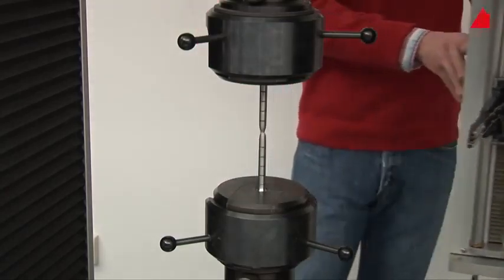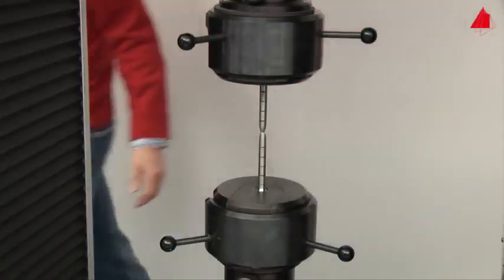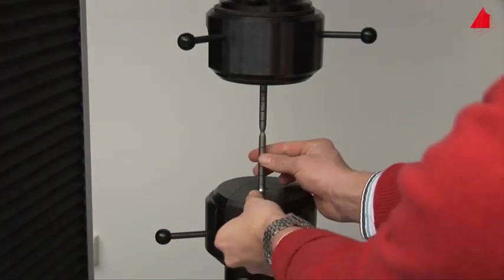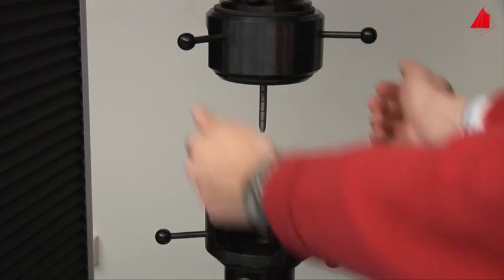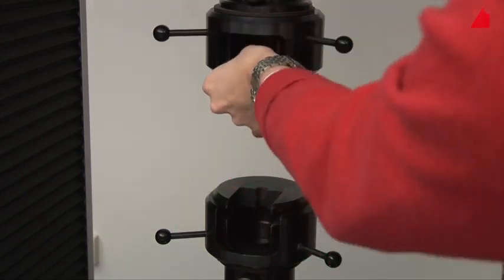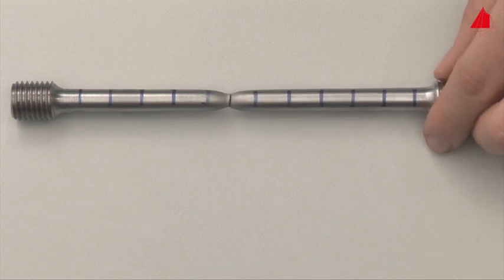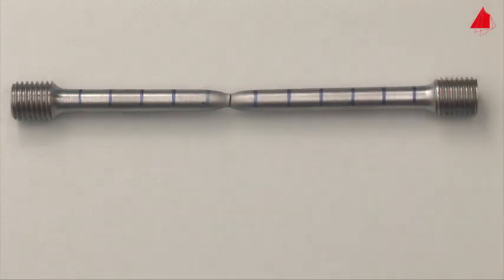In the last step, the tester swings the extensometer back into its resting position and removes the broken test piece. On the work table, he puts the fragments back together again.